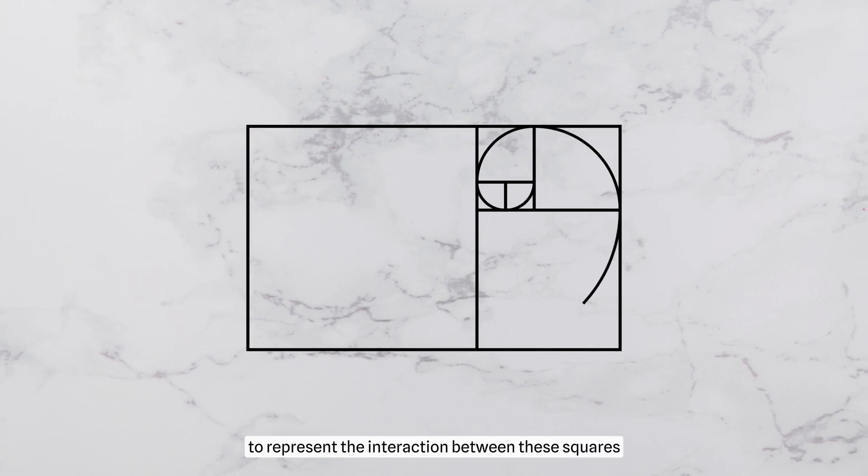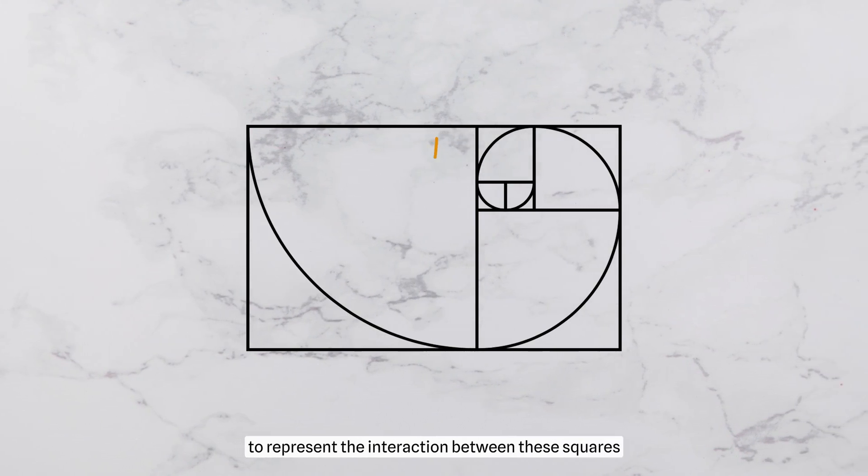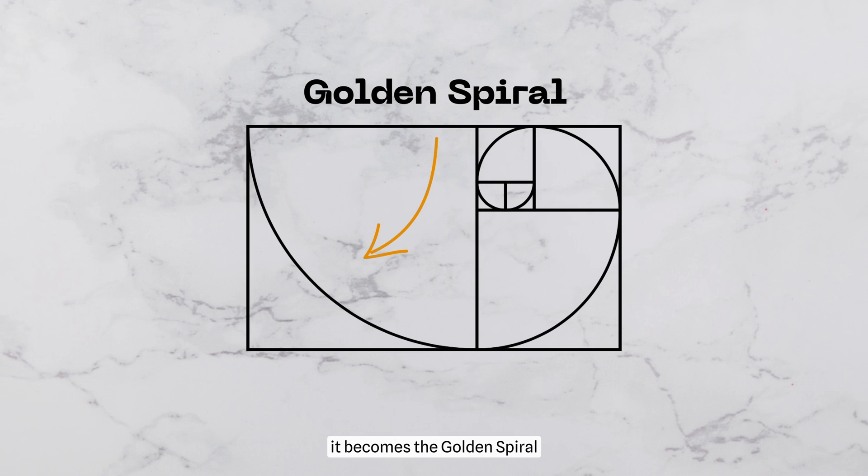And if I draw a spiral to represent the interaction between these squares, it becomes the golden spiral.